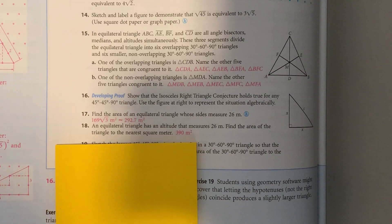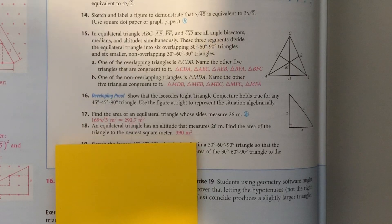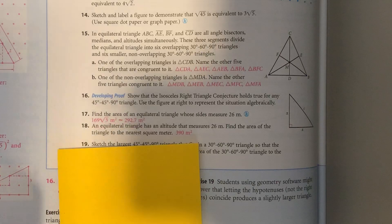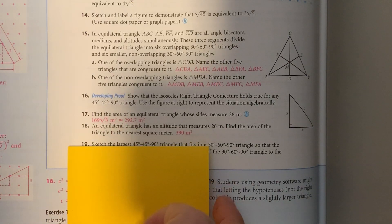If we take a look at the question, it says an equilateral triangle has an altitude that measures 26 meters. Find the area of the triangle to the nearest square meter. When we see 'to the nearest square meter,' we're going to be rounding using our calculator. But when we round, we always want to wait until the very last step, so we'll do all of our math as accurately as possible.